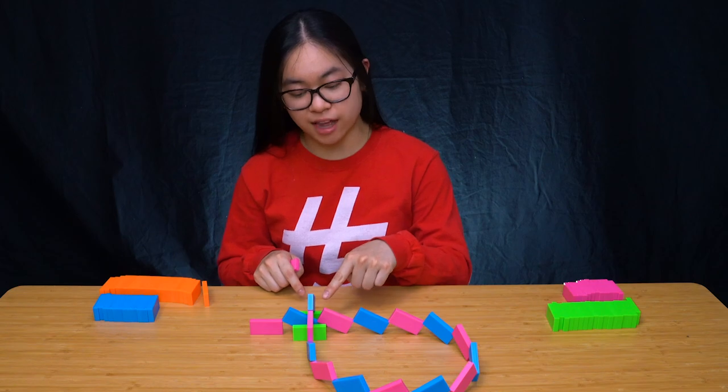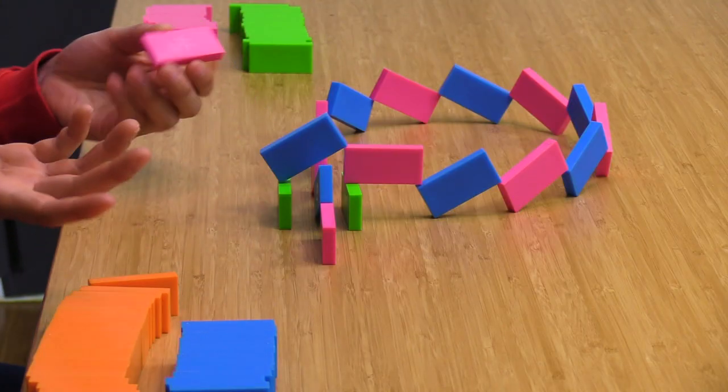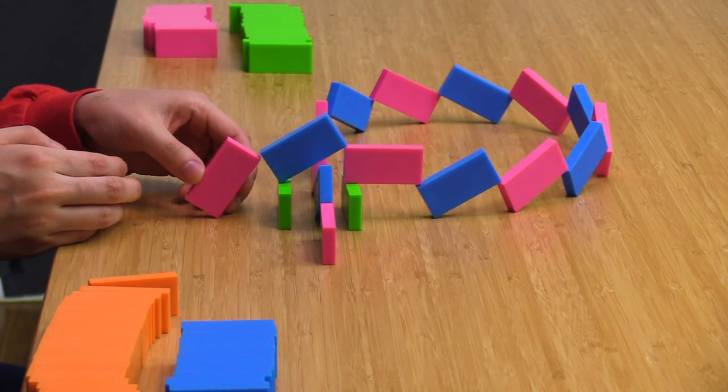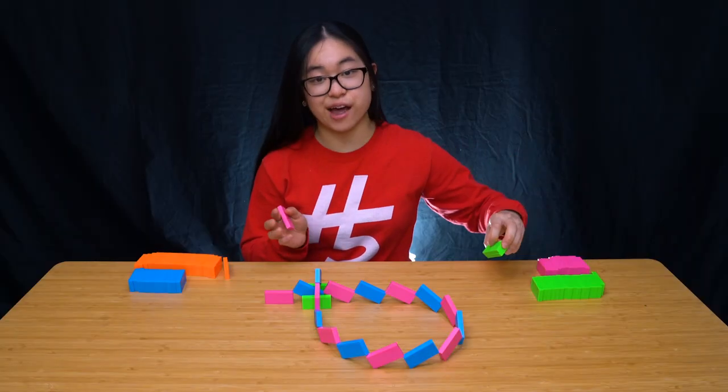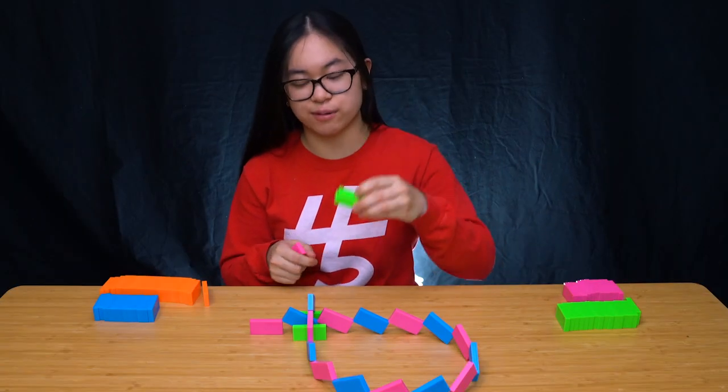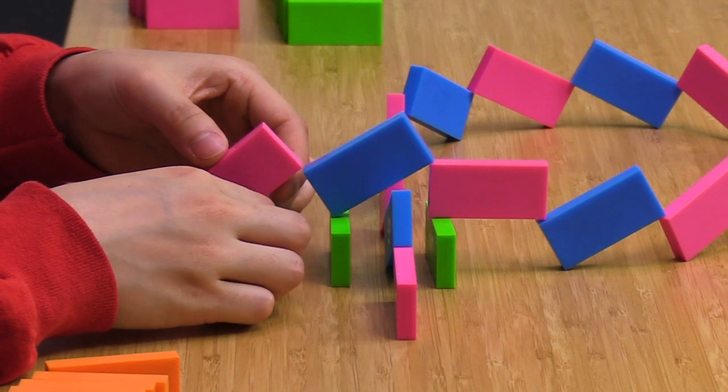Now because this blue domino is elevated from the ground, and if I were to place the next one, it just wouldn't really reach it. We're going to make a half step by stacking two dominoes together and then putting the next domino on top of that.